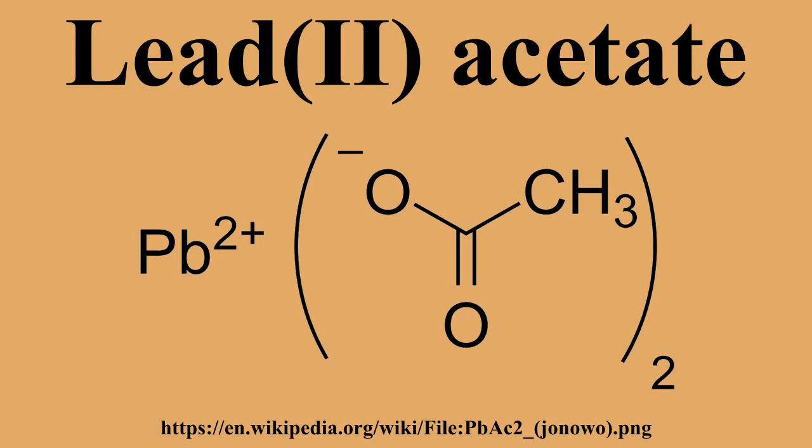It is made by treating lead oxide with acetic acid. Like other lead compounds, it is toxic. Lead acetate is soluble in water and glycerin. With water it forms the trihydrate Pb(C2H3O2)2·3H2O, a colorless or white efflorescent monoclinic crystalline substance.